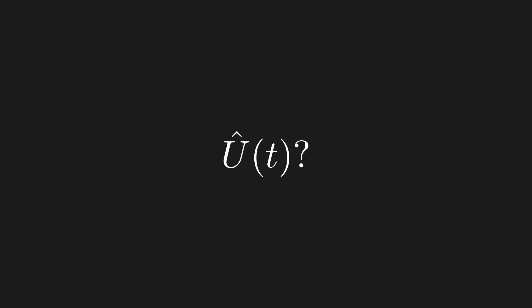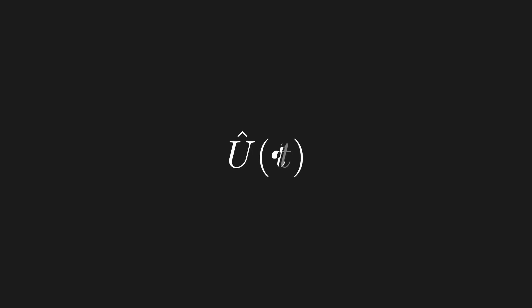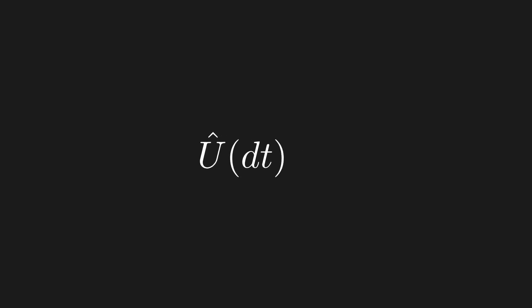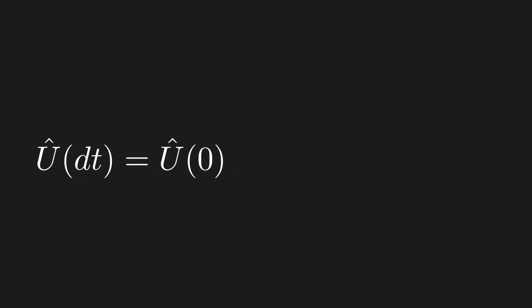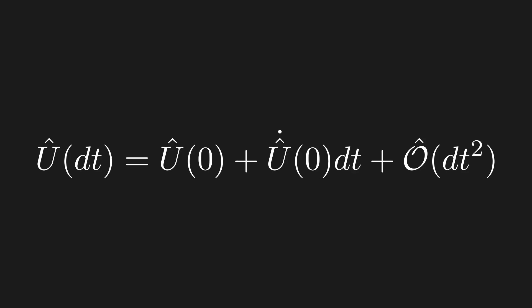With that, we're finally ready to start digging into exactly how this time evolution operator works. To do so, we employ a technique that should be in every physicist's toolkit. Finding the action of this operator over arbitrary time t sounds like a really tough problem; a much easier problem is to find the action over an infinitesimally small time dt. Since dt is really small, we can consider the Taylor expansion of this operator to first order. The first term is U of zero, the next term is the derivative at zero times dt, and we keep track of terms of order dt² and higher. Since U of zero is the identity, we have the following.